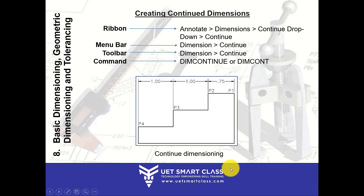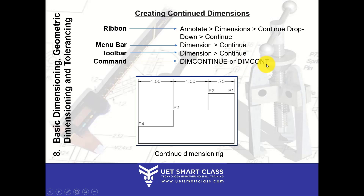Now, coming to the Continue tool — please don't get confused between baseline and continue, there is a major difference. To invoke it: in Ribbon go to Annotate tab, Dimensions, and in the Continue dropdown you will find Continue. In the command line, you can type DIM CONTINUE or DIM CONT. Basically, the continue tool helps you in creating linear dimensions in a continuous, incremental manner.